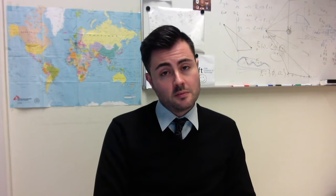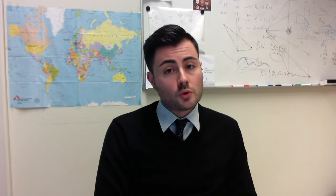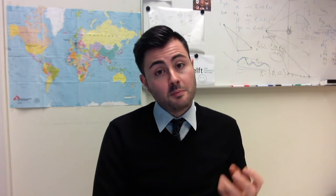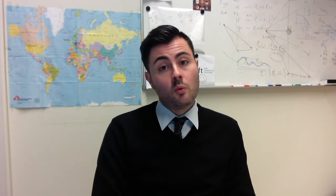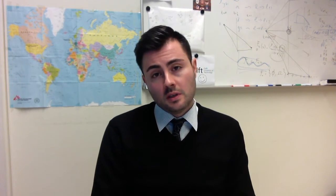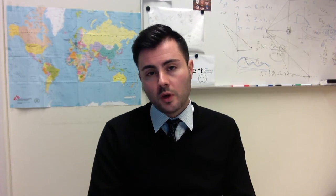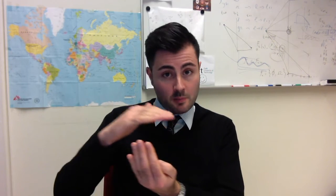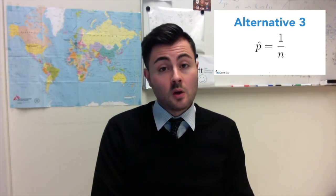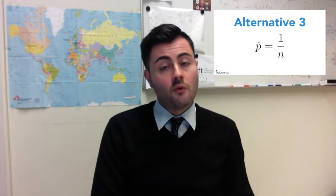Another estimator, called the upper bound estimator, is used by scholars who argue it is not logical that the p obtained in the case of zero defaults should be larger than what we would observe in the case of one default. In that case, what we call the upper bound — because this value serves as an upper bound for our probability — is simply 1 over n. Very simple.